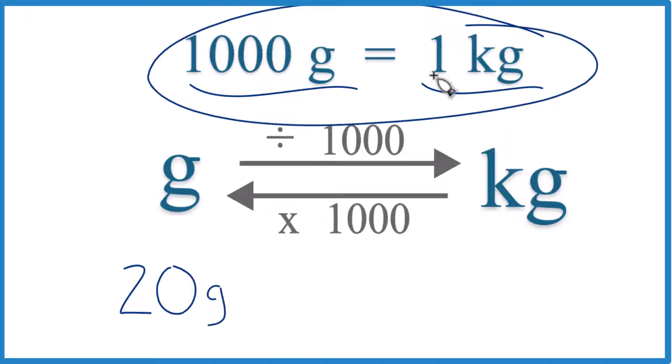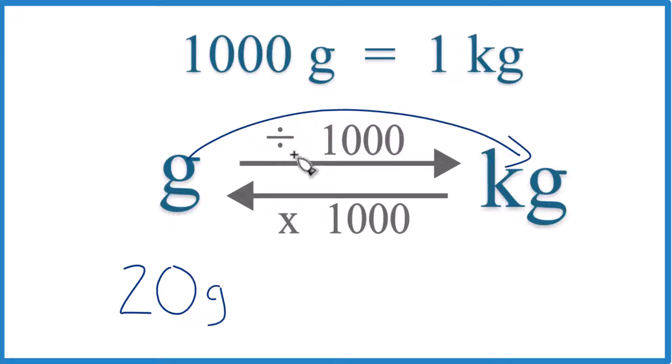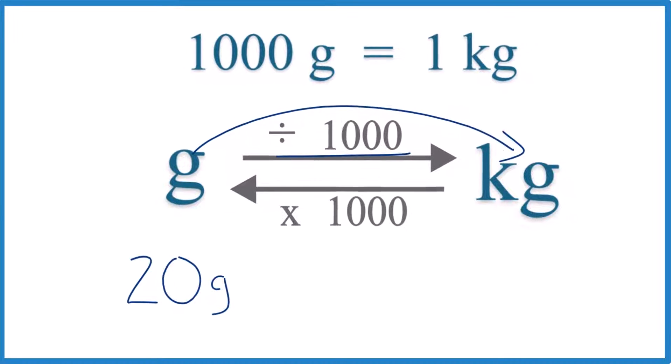It's what we call our conversion factor. So going from grams to kilograms, we just divide by 1,000, like this.